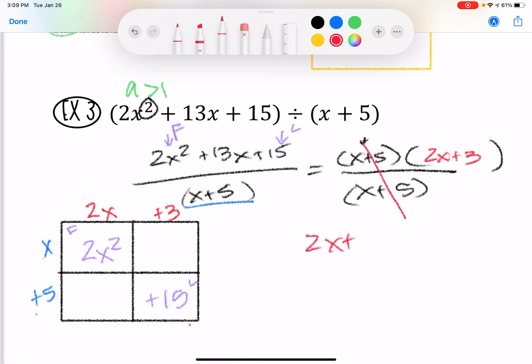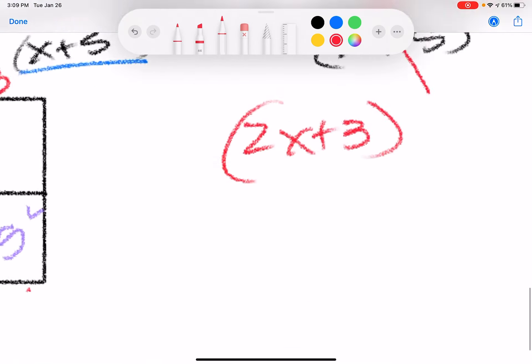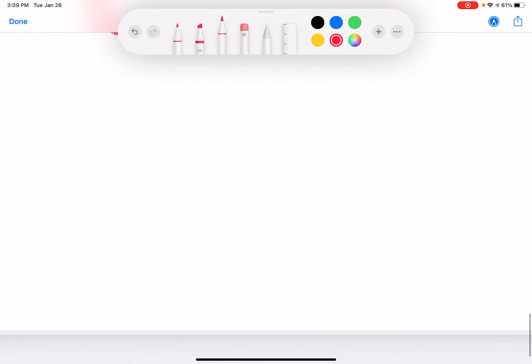This one cancels out. Your answer is actually 2x plus 3. That's how easy dividing polynomials is. If you really want to see this on a reverse box just on a normal problem that we would be doing, well, let's do this problem right here. You do not have to put this down in your notes if you don't want to but you can.